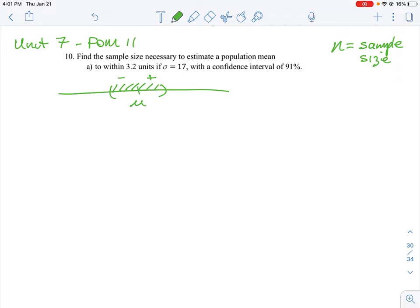If we have a number in a range that's plus or minus around that population mean, we have 91% confidence that the number is contained 91% of the time around that mean. So how big of a sample size would we need to take to have this kind of confidence interval?